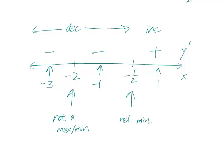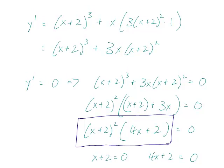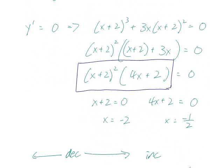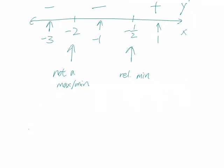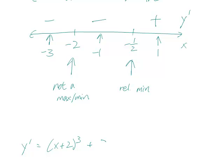All right, so we have half the problem. Now let's move on to y double prime and find concavity and inflection points. Let's go look at y prime again. Y prime is x plus 2 cubed plus 3x times x plus 2 squared.